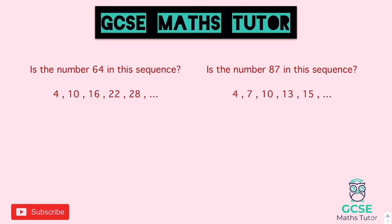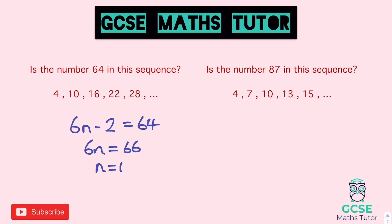Two more practice questions — pause and try them. First: is 64 in the sequence? The sequence goes up in 6s, so it's 6n. Going back 6 from the first term gives minus 2, so the nth term is 6n minus 2. Setting that equal to 64: adding 2 gives 6n equals 66, dividing by 6 gives n equals 11. Yes — 64 is the 11th term.